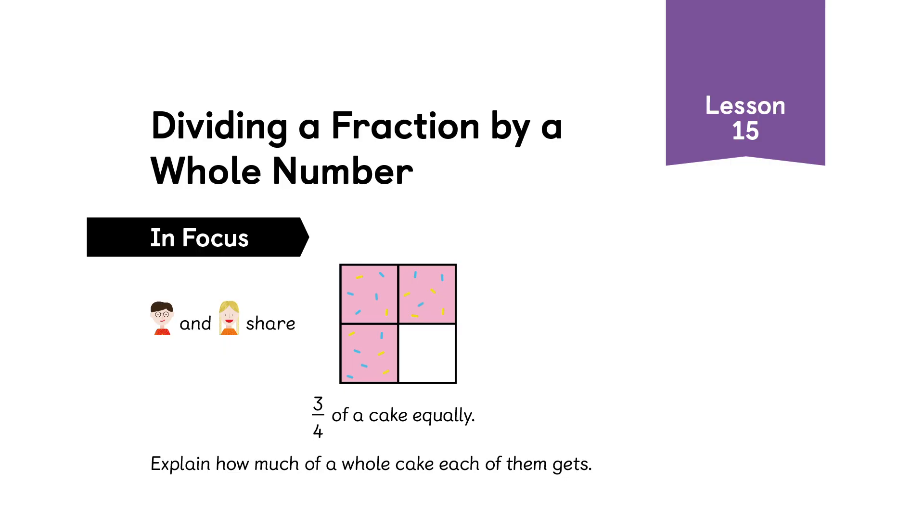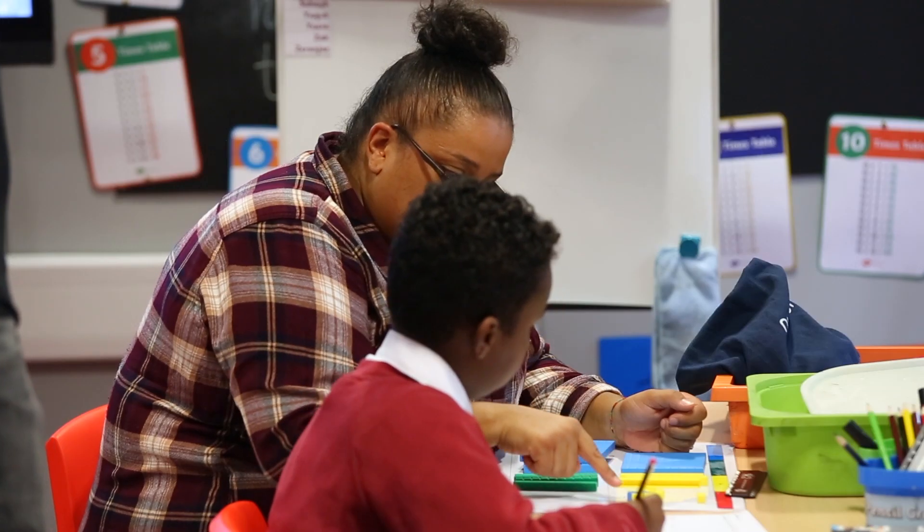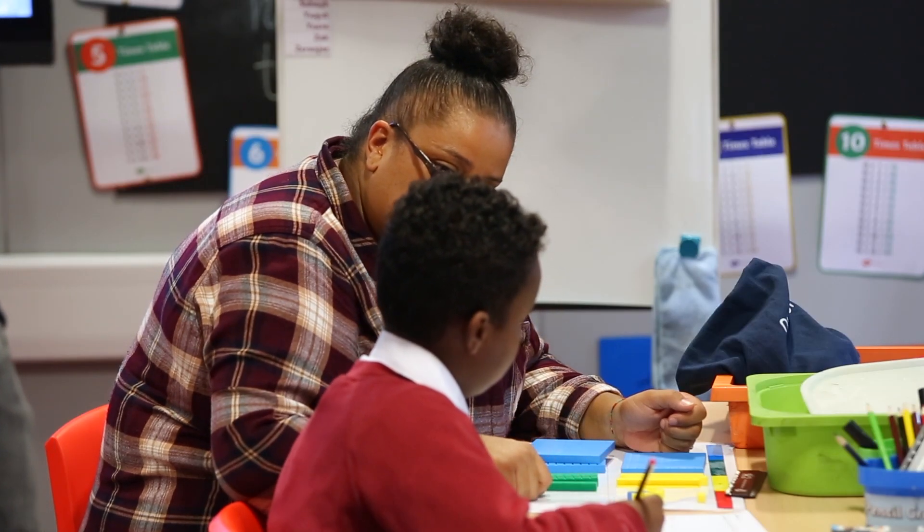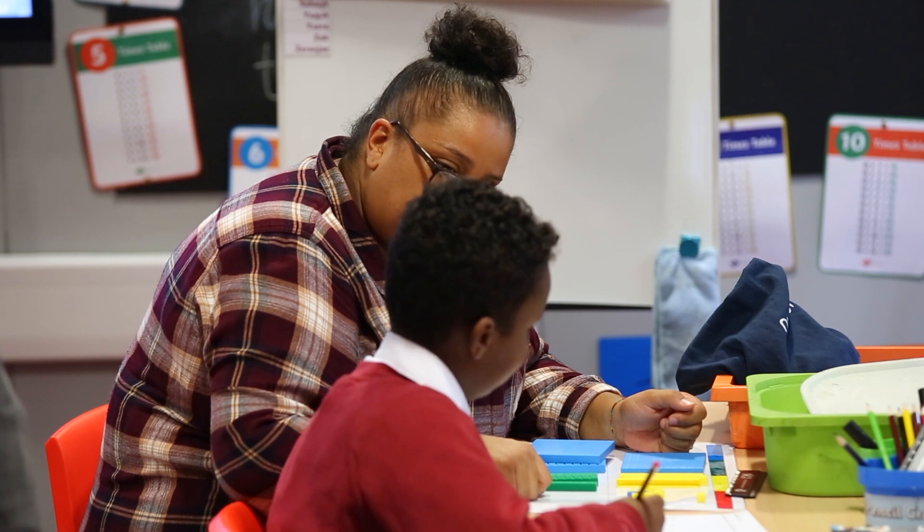In a year six lesson, when students were trying to find out ways to share three quarters of a cake between two friends equally, the teacher may ask the students to journal about two or three ways that the class have come up with during the exploration.